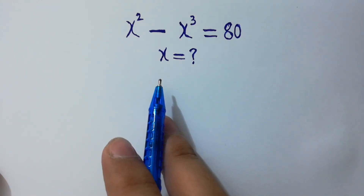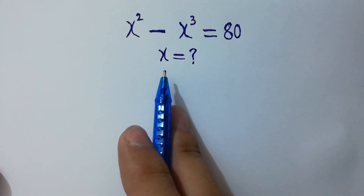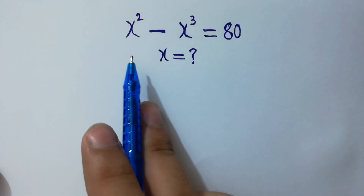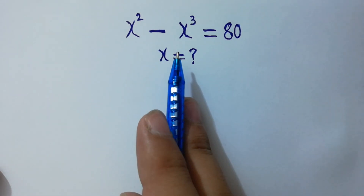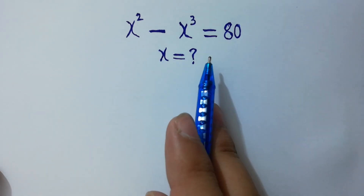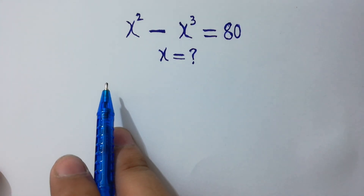Hello friends, find the value of x if x squared minus x cubed equals 80. Let's solve it.